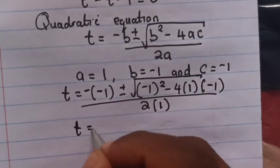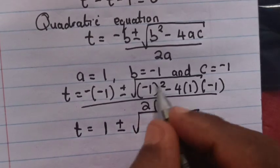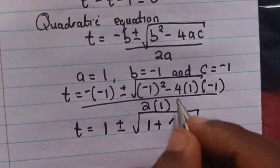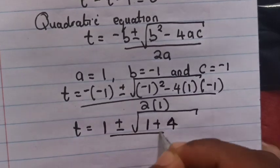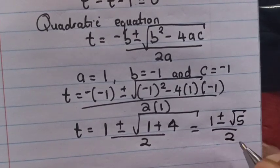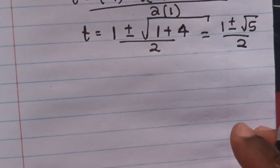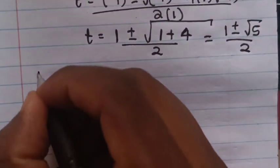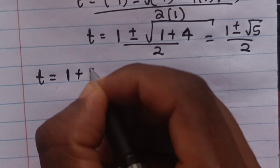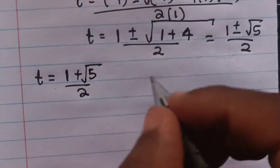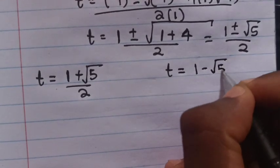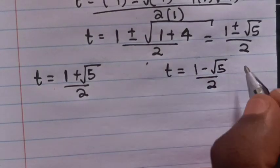So t will be equal to 1 plus or minus square root of 1 plus 4 — since negative times negative is positive 4 — divided by 2. This gives t equals 1 plus or minus square root of 5, divided by 2.